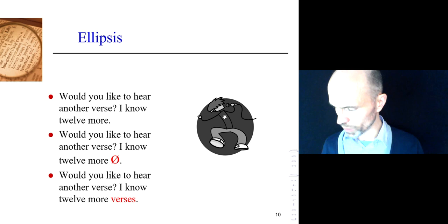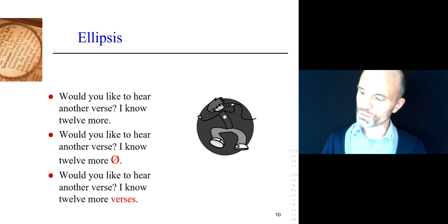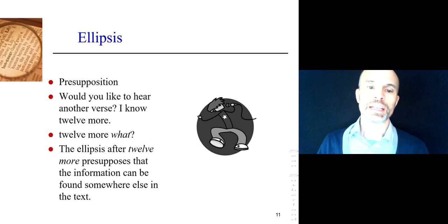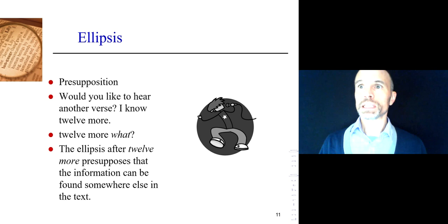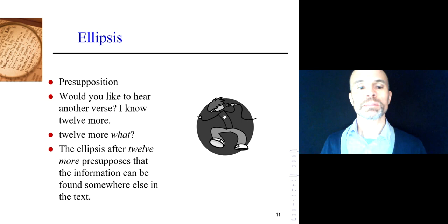'Verse' would work there. The ellipsis after '12 more' presupposes — you know that term — it presupposes that the information can be found elsewhere in the text. Earlier, anaphorically: 'I know 12 more verses.' So the ellipsis after 'more' in the second sentence points back to 'verse' from the first sentence.